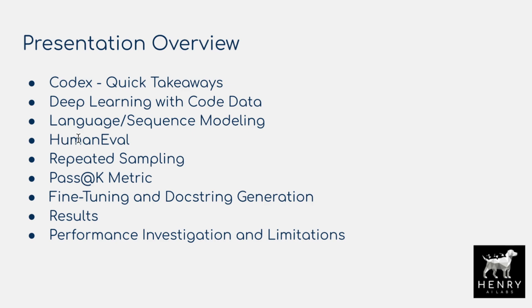Then we'll look at the HumanEval benchmark, designed by the authors to test the system. We'll look at the repeated sampling technique — a way to overcome beam search or greedy decoding where you generate many samples and see what passes the unit test. We'll cover the pass@K metric, similar to information retrieval metrics measuring how many K samples you need to generate to pass the unit test.